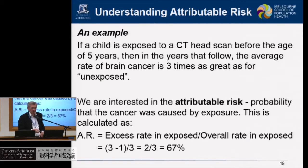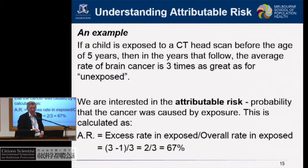For example: if a child is exposed to a CT scan before the age of five, the average rate of brain cancer in subsequent years is about three times that of unexposed children. The attributable risk is therefore (3 minus 1) divided by 3 — two-thirds probability that the cancer was caused by the CT, in the case of a head scan with brain cancer after exposure at a young age.